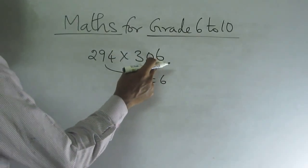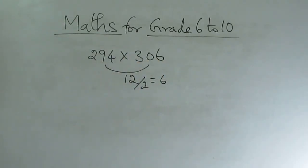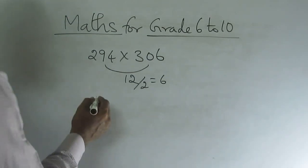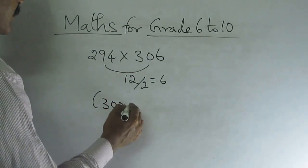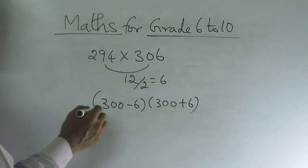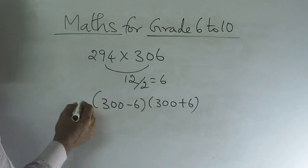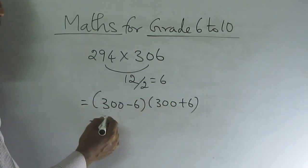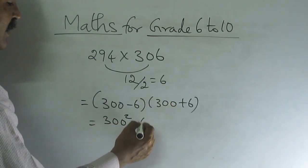Now add 6 here. 306 minus 6? 300. 294 plus 6? 300. So how can we write this? This is 300 minus 6 into 300 plus 6. Now how to do this in another way? This is A plus B into A minus B. So this is 300 square minus 6 square.